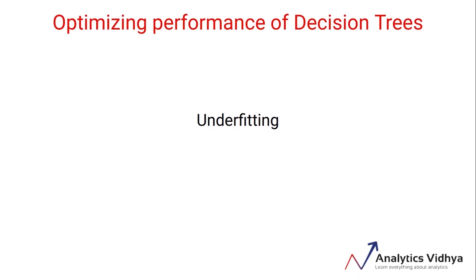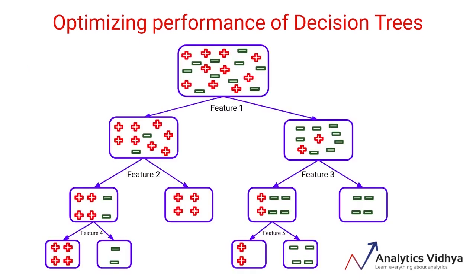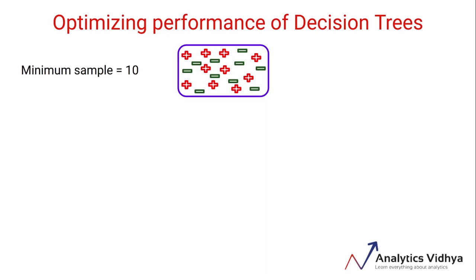First, we can set a constraint on the minimum samples for a node split. Here we set a constraint that a node will only split into sub-nodes if it has a certain number of samples. Let's say this is a fully grown tree and we set minimum samples for a node split as 10.